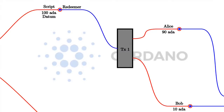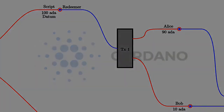So this is the eUTXO model — the extended unspent transaction output model. It is of course not tied to a specific programming language. What we have is Plutus, which is based on Haskell. But in principle you could use the same eUTXO concept with a completely different programming language. There are also plans to write compilers from other programming languages to Plutus Script, which is sort of the assembly language underlying Plutus. Understanding the eUTXO model is independently valid from learning the specific Plutus syntax.